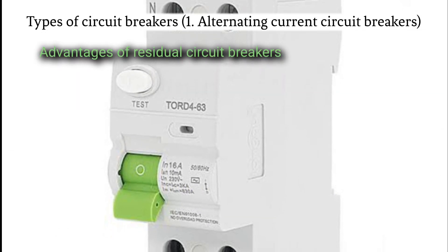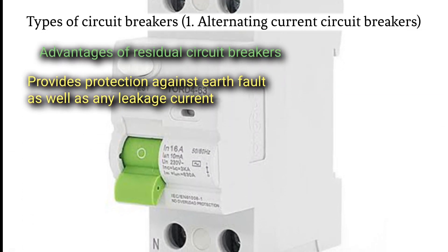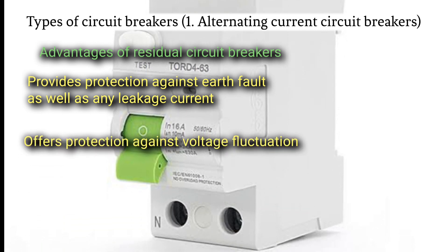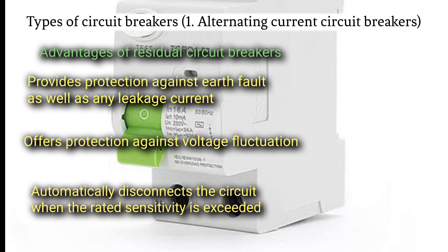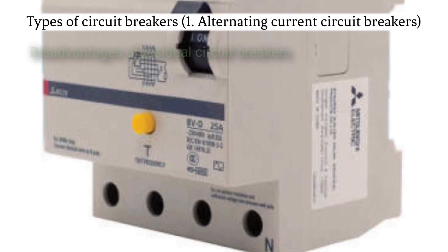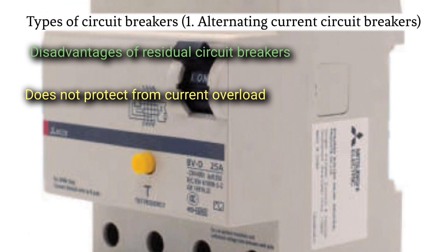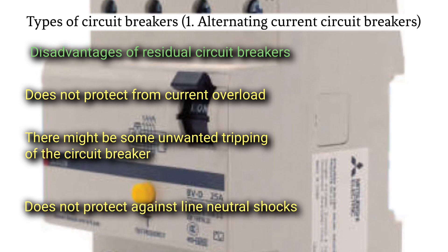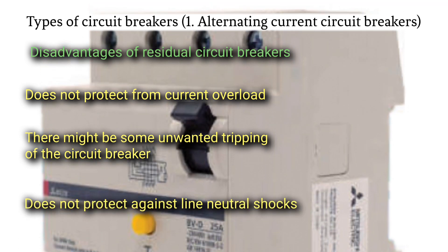Advantages of residual current circuit breaker: provides protection against earth fault as well as any leakage current; offers protection against voltage fluctuations; automatically disconnects the circuit when the rated sensitivity is exceeded. Disadvantages of residual current circuit breaker: does not protect from current overload; there might be some unwanted tripping of the circuit breaker; does not protect against line to neutral shocks.